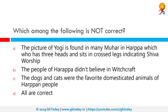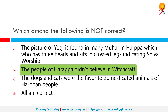Which among the following is not correct? Option B is not correct. The statement that Harappa didn't believe in witchcraft is not entirely true, because we have found a lot of talismans made of bronze and copper which indicate that the people of Harappa did believe in something akin to witchcraft and dead souls.